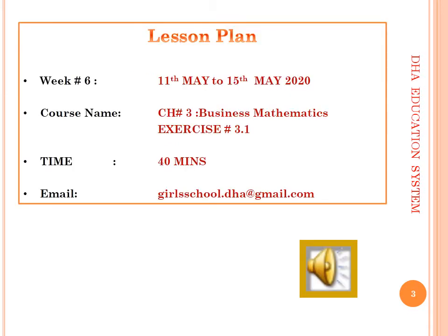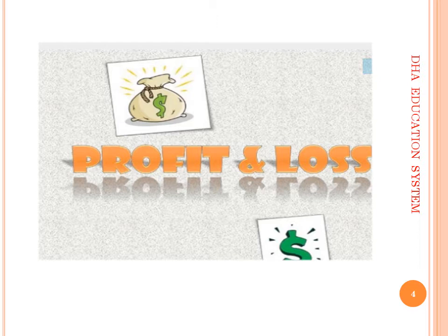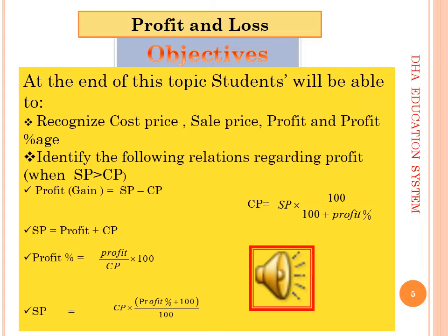For Week 6, from 11th May till 15th May, we are going to start Chapter 3 Business Mathematics, Exercise 3.1, which is all about profit and loss. At the end of this exercise, students will be able to recognize cost price, sale price, profit, and profit percentage. Learn all formulas from page 44; applying only these formulas in Exercise 3.1 will help you get the answer within two minutes.